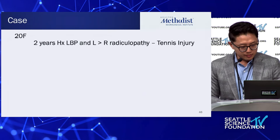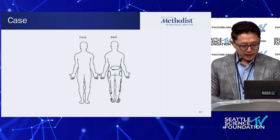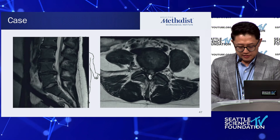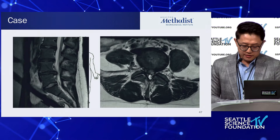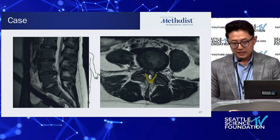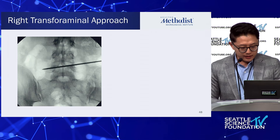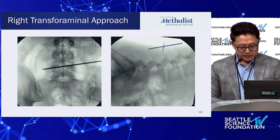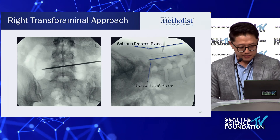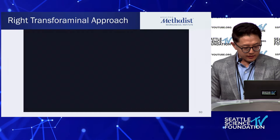Quick case example: 20-year-old female with two years of low back pain and bilateral radiculopathy after a tennis injury, acutely worse over three months, non-focal exam, bilateral sciatica. Imaging shows the herniation has enlarged significantly, quite central, with a narrow interlaminar window. In a 20-year-old, ideally you don't want to sacrifice any facet joint. The trajectory line is marked, walked out laterally, starting slightly more ventral to access the central herniation — about halfway between the spinous process line and dorsal facet line.